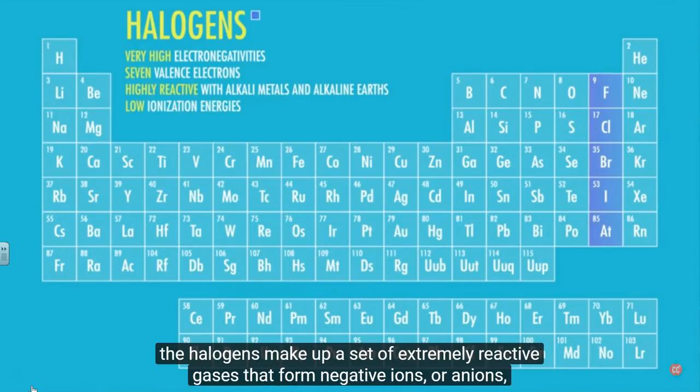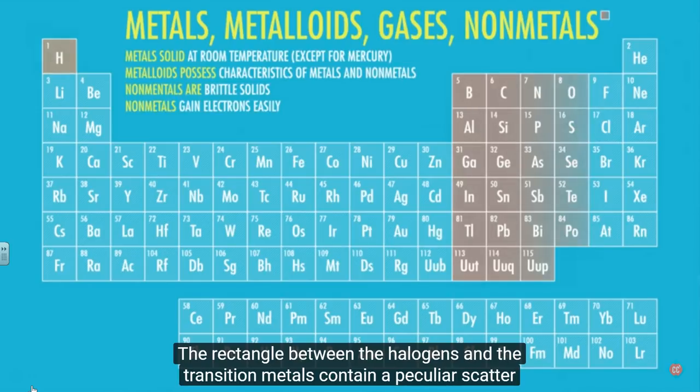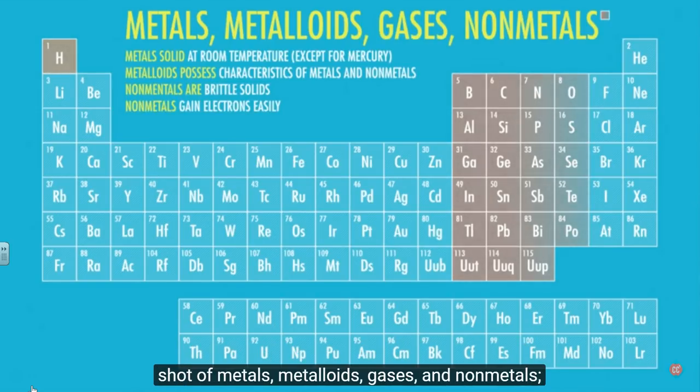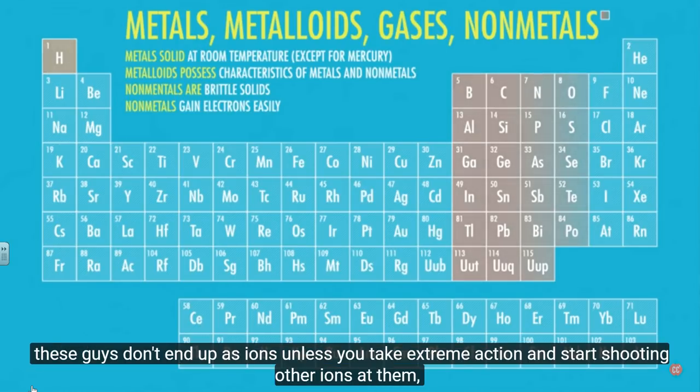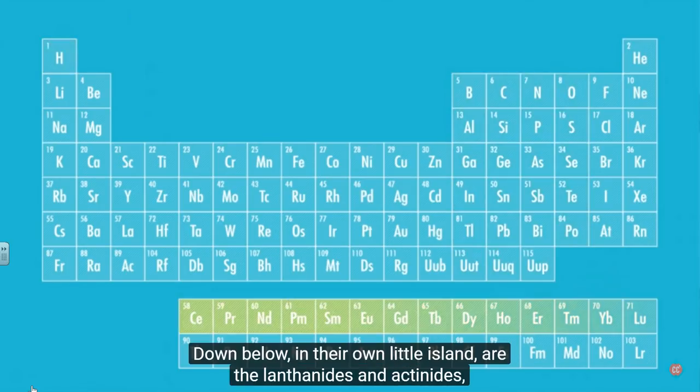On the far right, just over from the noble gases, the halogens make up a set of extremely reactive gases that form negative ions or anions with one negative charge and love to react with the alkali and alkaline earth metals. The rectangle between the halogens and the transition metals contain a peculiar scatter shot of metals, metalloids, gases, and nonmetals. These guys don't end up as ions unless you take extreme action and start shooting other ions at them. So generally, a bit boring over here, though lots of interesting covalent organic chemistry. We'll get to that.